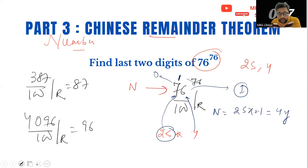So I can write this number N as 25X plus 1, and I can write this number as equal to 4Y because it's divisible by 4. Now, how do I write a general term or equation which satisfies both these equations? That is the key aspect here.